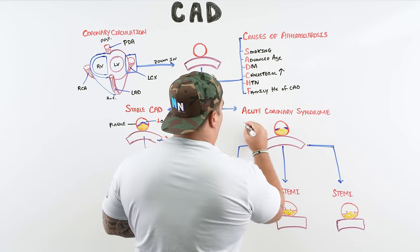Acute heart failure is also most common within the first 24 hours. A massive LAD occlusion — which supplies the septum, apex, and part of the lateral wall — is the most disastrous. Infarcting this large territory drops left ventricular contractility and reduces the left ventricular ejection fraction significantly.